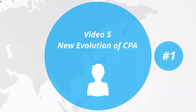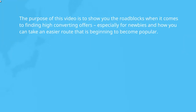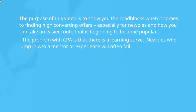Hello, welcome back. This is video number five — the new evolution of CPA offers. The purpose of this video is to show you the roadblocks when it comes to finding high-converting offers, especially for newbies. If you're just getting started and you've tried CPA offers before without much success, this might be an easier route for you. It's becoming more popular — it's a sort of smart artificial intelligence computer that can figure out what kind of CPA offers your traffic will convert best.